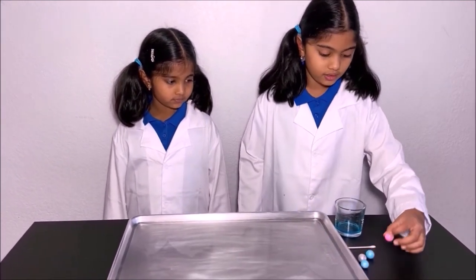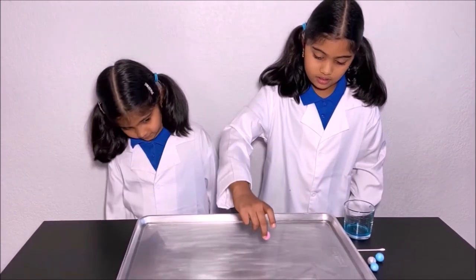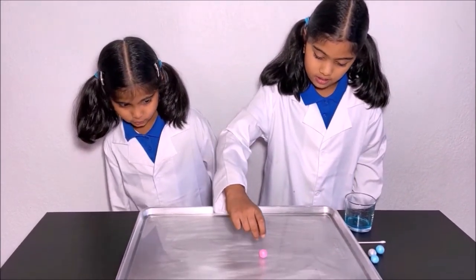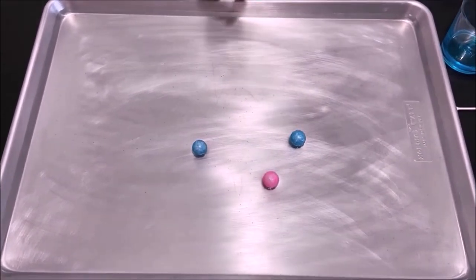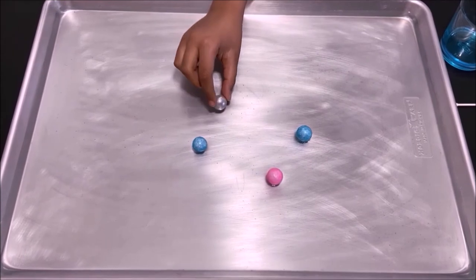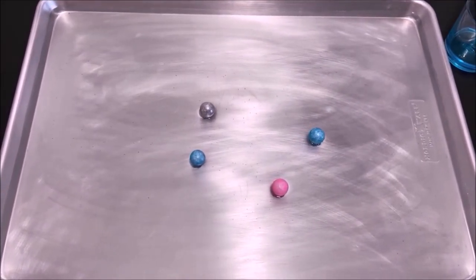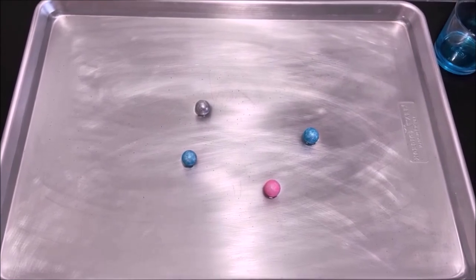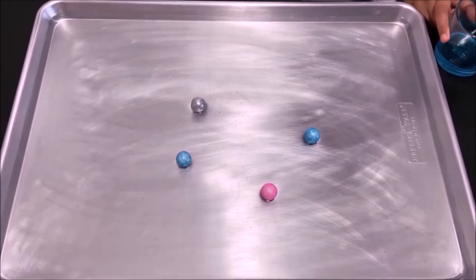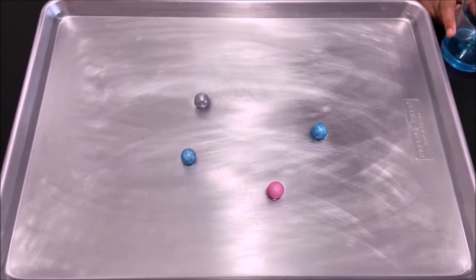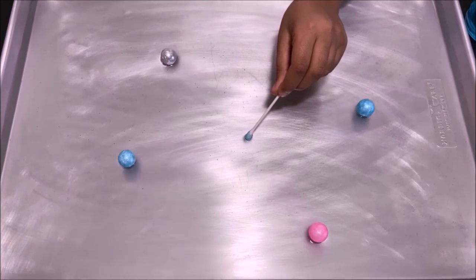First, I'm going to take one styrofoam ball and put it in the middle of the tray. Then I'm going to take the last one and put it over here. And then I'm going to take a cotton swab and dip it into the cup of the dishwashing soap. And then I'm going to put it in the middle of the balls.